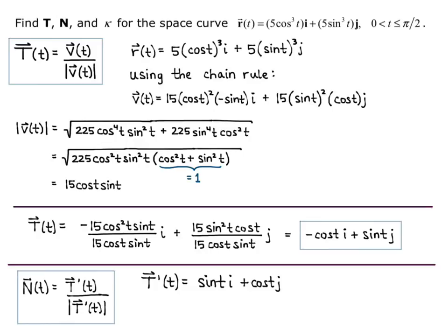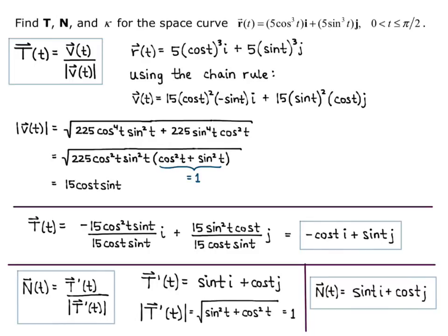The magnitude of capital T prime of t equals the square root of sine squared of t plus cosine squared of t, which we just discussed equals 1. And so our principal unit normal vector is sine of t i plus cosine of t j. It works out so nicely when you can get that Pythagorean identity: cosine squared plus sine squared equals 1.